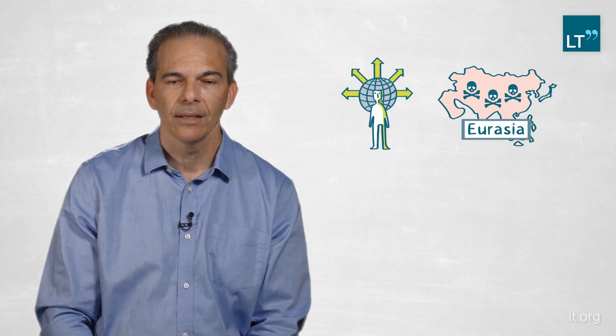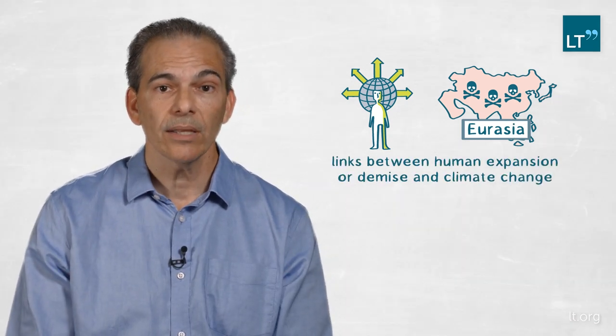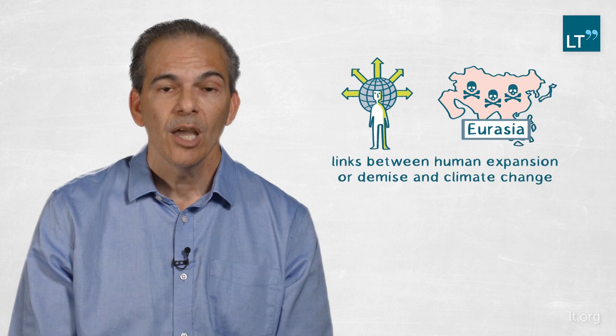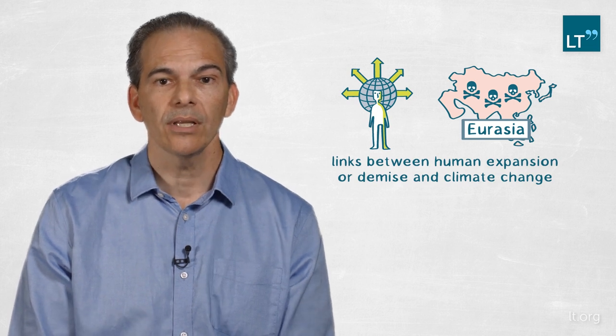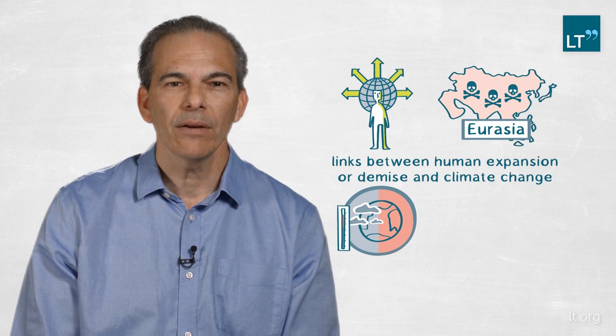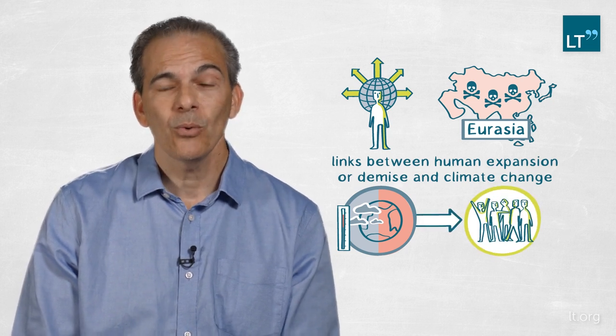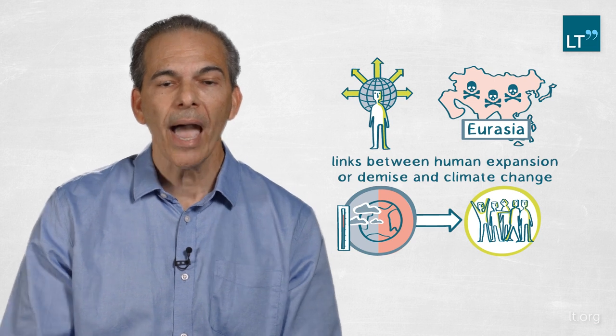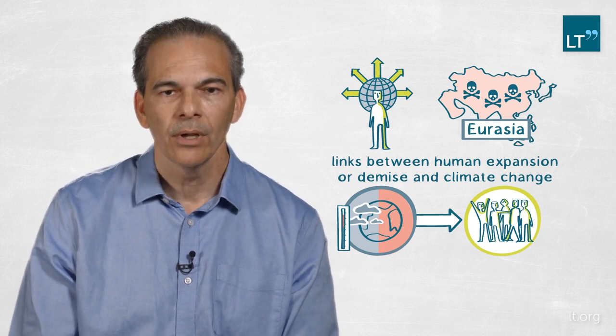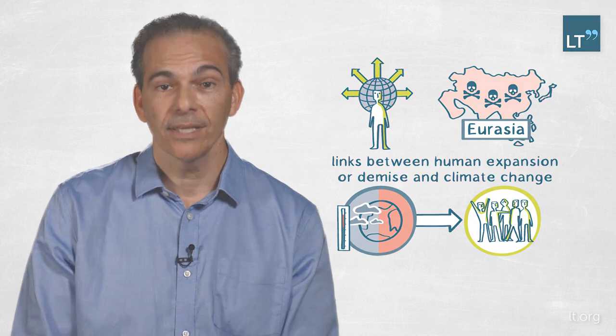Fluctuations between warm and wet intervals and dry intervals is very important when we think about out of Africa migrations. It led to either the expansion of humans during certain periods or may have even led to the demise of humans in certain parts of Eurasia when things got bad. This is very relevant to us today because we're interested in the role of climate change and its effect on society. These lessons from the past can be very important in thinking about people today.